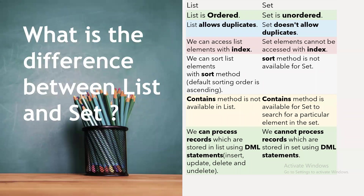What is the difference between List and Set? List is ordered, Set is unordered. List allows duplicates, Set does not allow duplicates. List elements can be accessed using an index, whereas Set elements cannot be accessed with an index.